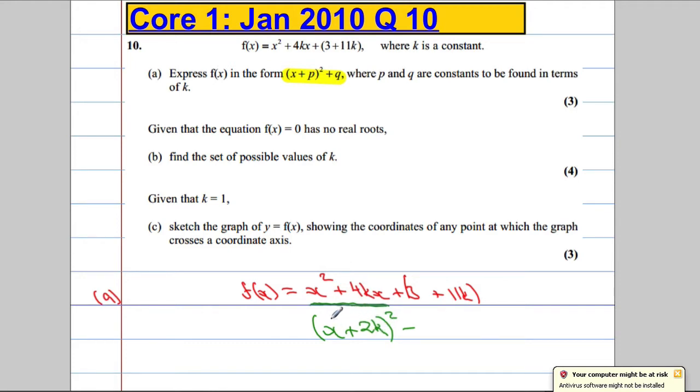That's got to be squared, and we need to subtract what we've created. When I expand this out, I'm going to get an x squared, a 4kx, but I'm also going to get a 4k squared that I don't want. So I'm going to take away 4k squared, and let's not forget, we still had the 3 plus 11k. And hence we've completed the square.